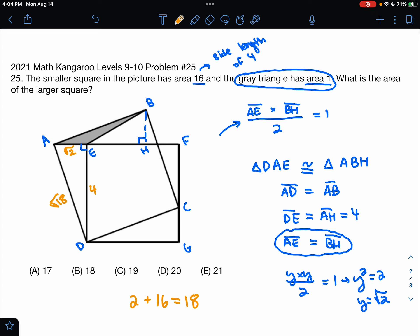Which means that the larger square ABCD must have an area of 18, which is answer choice B.